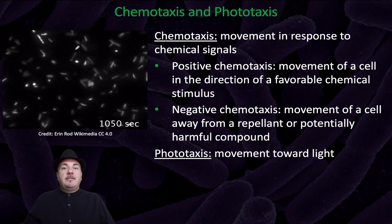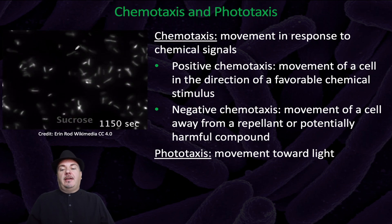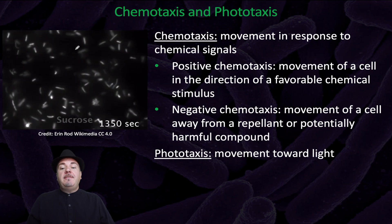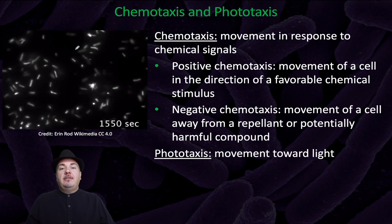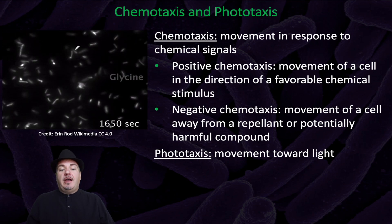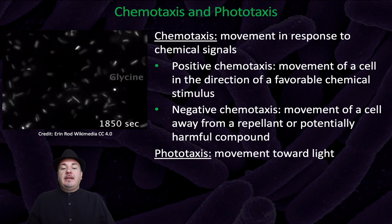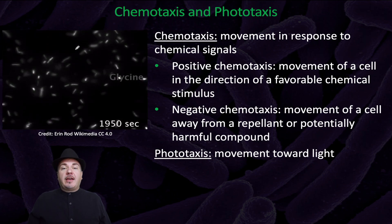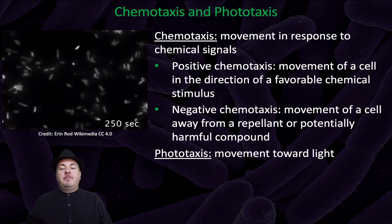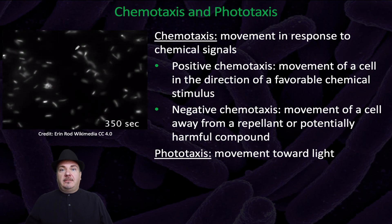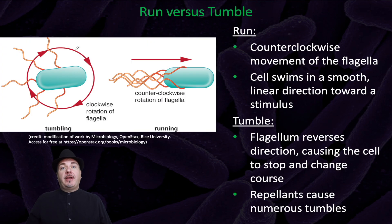Or they could have negative chemotaxis, which is movement of a cell away from a repellent or potentially harmful compound. In addition to chemotaxis, we can also have phototaxis, which is movement towards light. Now, when the bacteria are moving, the way they move is through runs and tumbles.